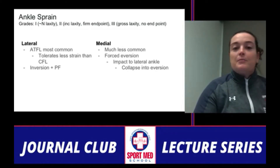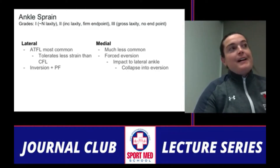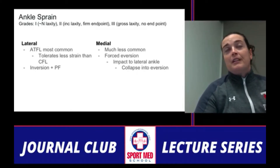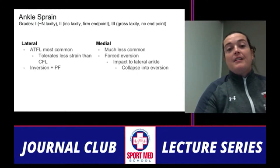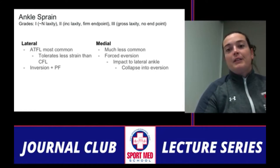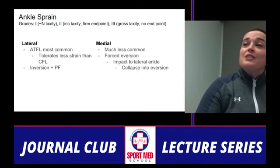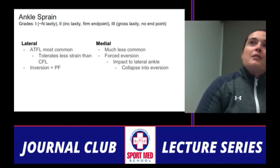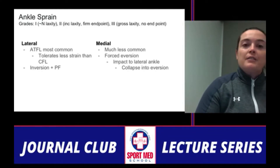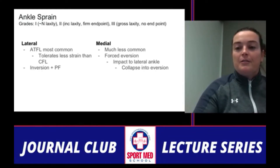The ATFL is the most common ligament to be sprained laterally, and at baseline it tolerates less strain before it fails than the CFL. That's what we think of as the rolled ankle — commonly inversion and plantar flexion. Medial injuries are much less common and tend to be forced eversion injuries. Another mechanism is a direct impact to the lateral ankle while weight-bearing, causing the ankle to go into varus.